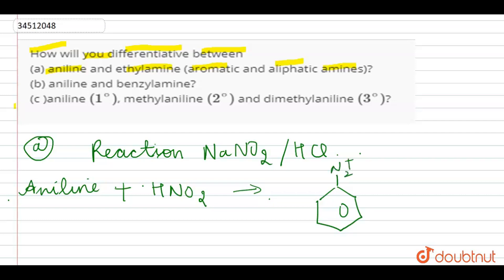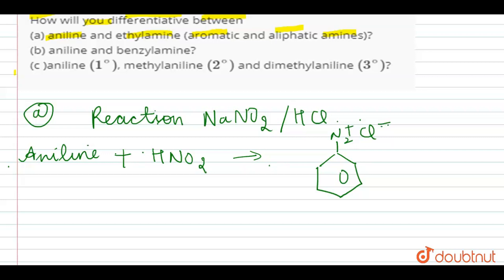and when diazonium salt is formed, it gives a scarlet azo dye. It gives a scarlet azo dye on reaction with beta-naphthol. So, formation of scarlet azo dye is taking place.